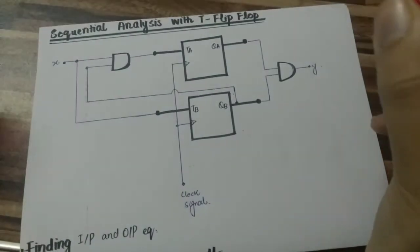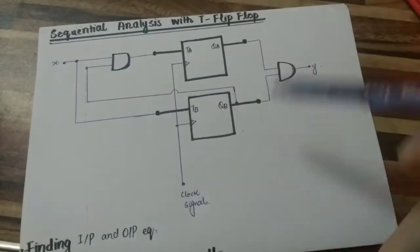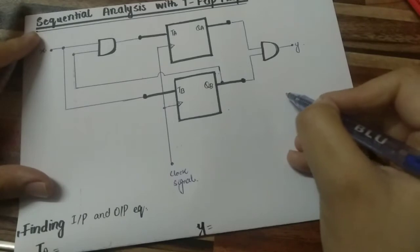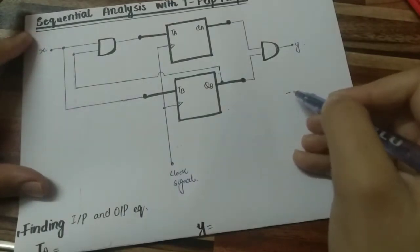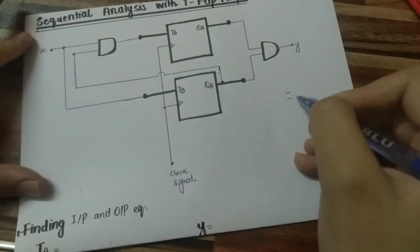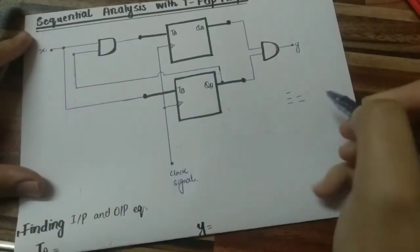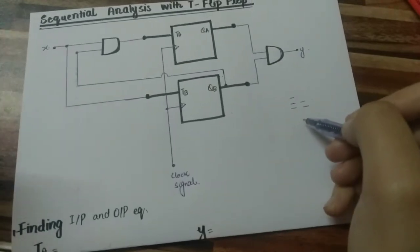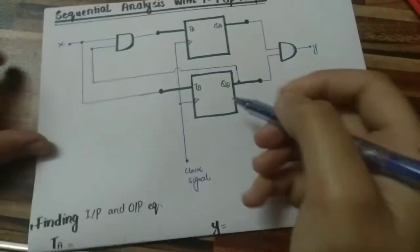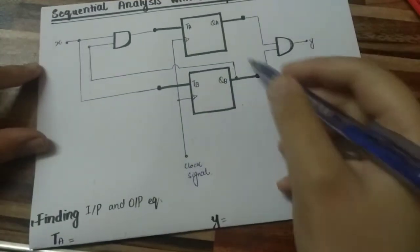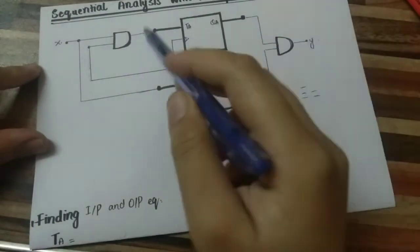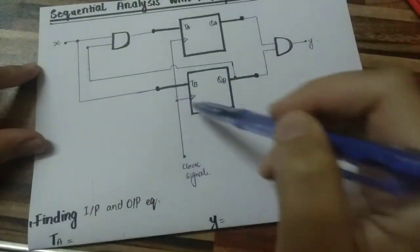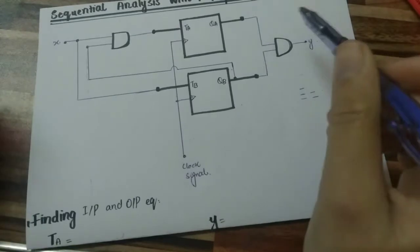Here we have a simple circuit given. The first step was to find out the input-output equation. The second step was the state equation. The third step was the state table. The fourth step was the state diagram. Here is the output-combination circuit, the input-combination side of the circuit, and the memory element.